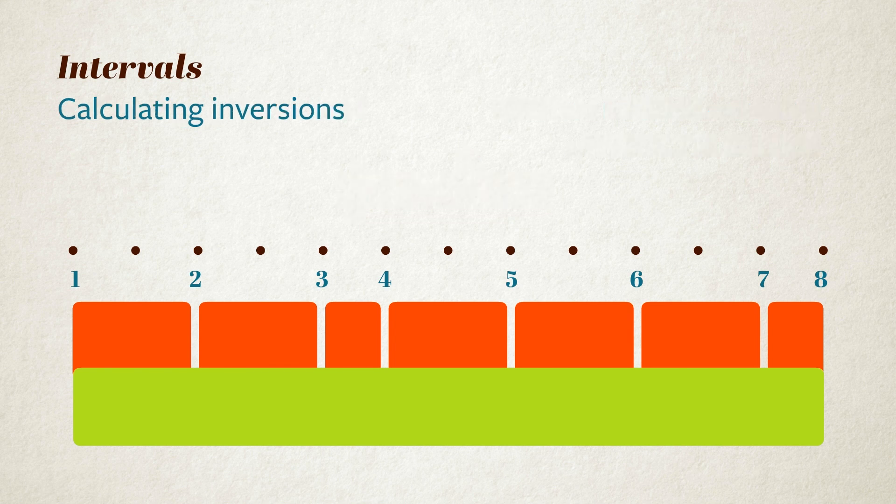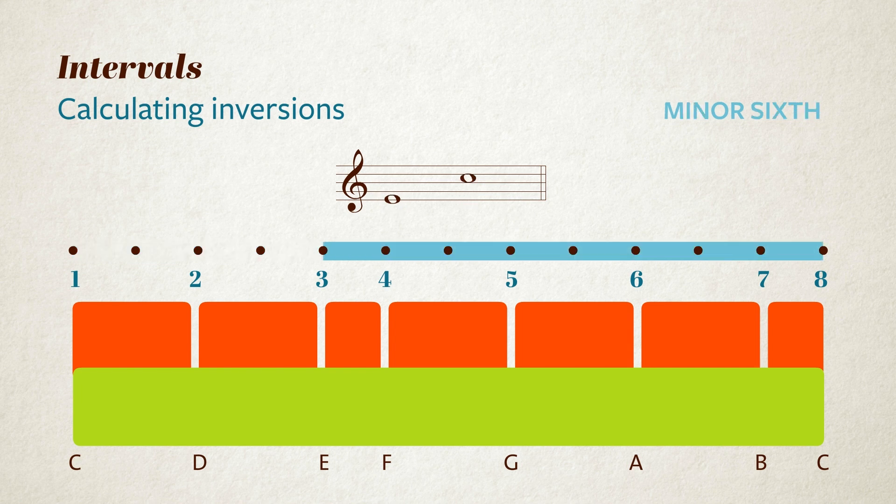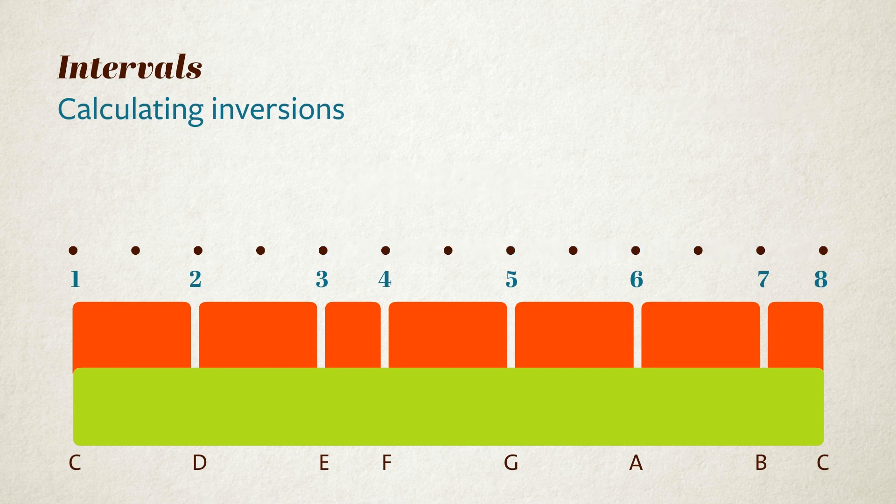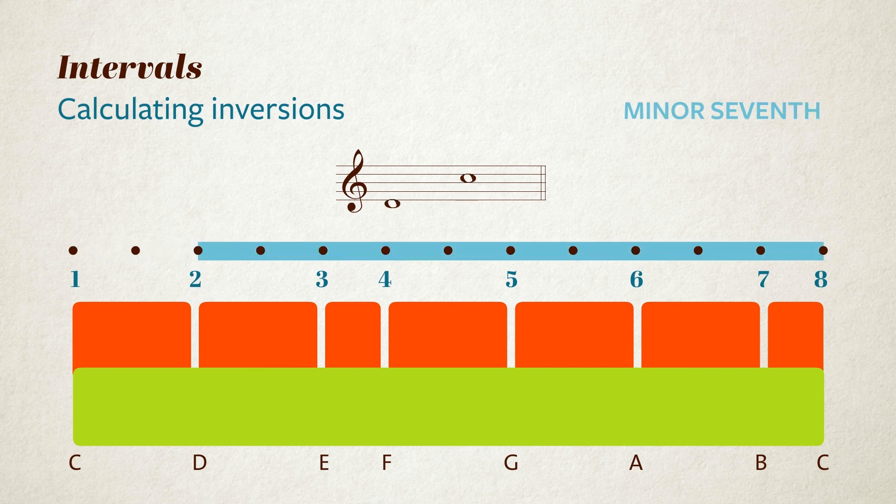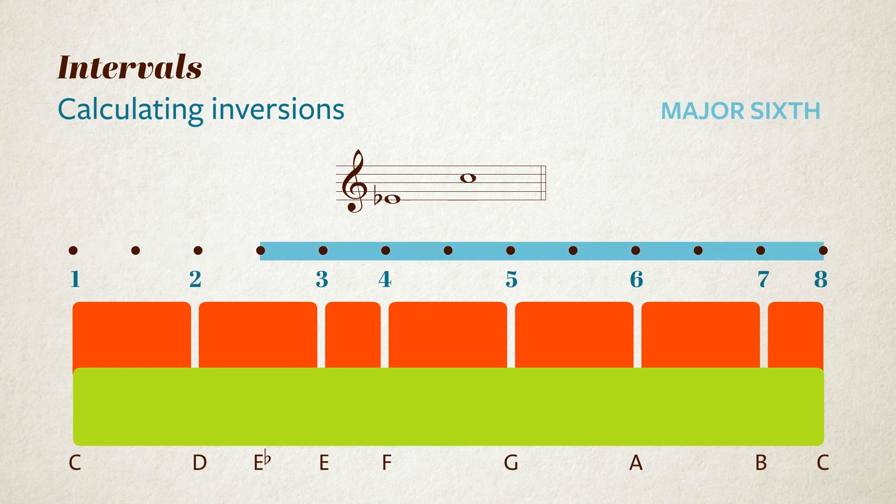Finally, here are a couple of useful tips when it comes to working out inversions. Remember, these are intervals where one note is flipped up or down an octave. Here's a major third between C and E. Now, if we raise the C by an octave so it's above the E, we have a minor sixth. Invert any major interval and you'll have a minor one. Here's a major second, which inverts to a minor seventh. And vice versa. A minor interval inverted gives you a major one. Here's a minor third. And here's the inversion, a major sixth.